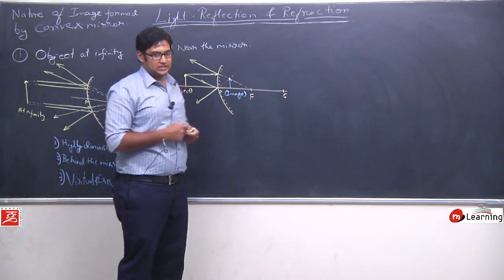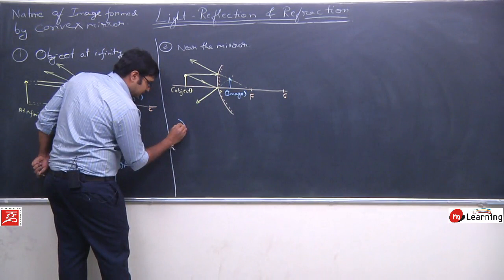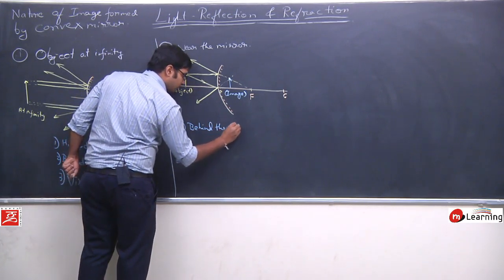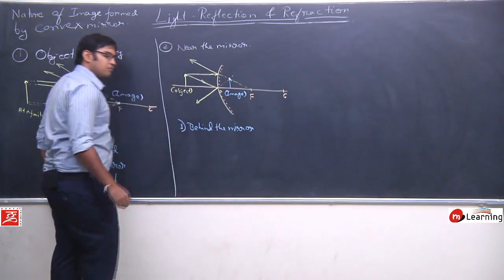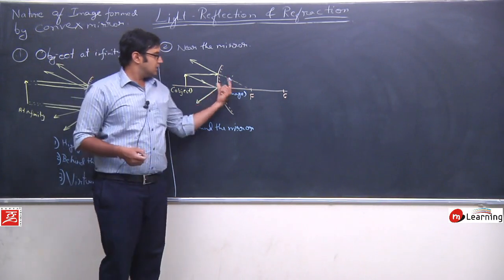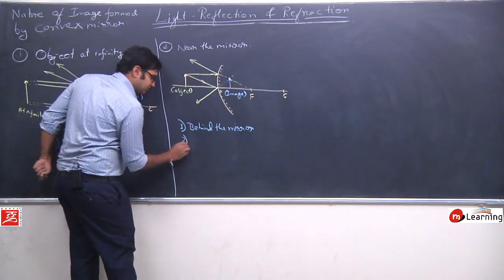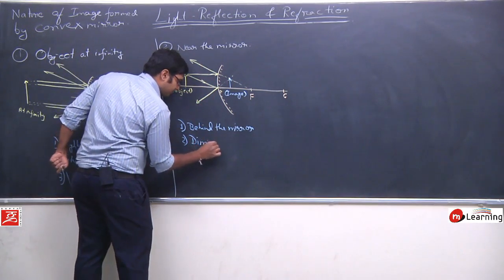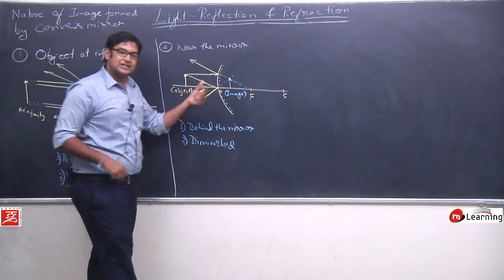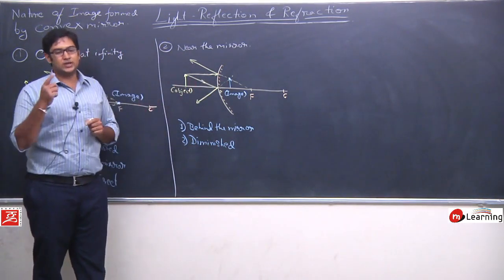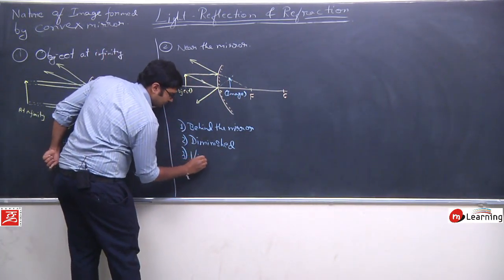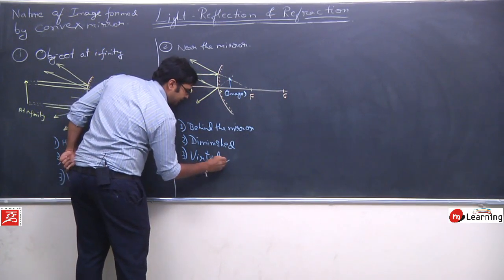Now, which other ray can we take? We can consider a light ray striking the pole. Whatever angle it strikes at, it will reflect back at the same angle. And it will appear as if this light ray is coming from somewhere behind. So if I extend both these light rays behind the mirror, we will see an image forming there. Can we determine the nature of this image? Yes. First, this image forms behind the mirror. And this image is smaller than the object - so image is diminished. And this will be a virtual image, because it formed behind the mirror. So the image is virtual and erect.